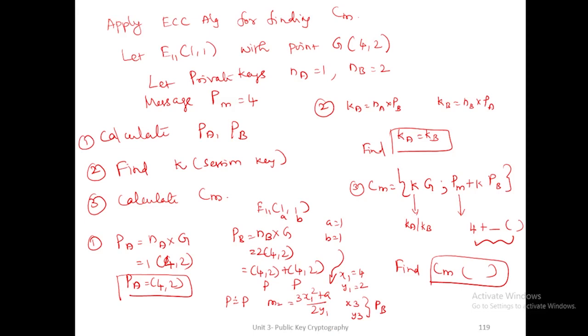Welcome to cryptography class. Today I am going to explain the problem for solving elliptical cryptography notations. The problem is: apply elliptical cryptography algorithm for finding the ciphertext value. They will give the points E11(1,1) with base point G(4,2), and the private key values are na = 1, nb = 2, and the plaintext message pm = 4. We need to calculate public keys pa and pb, session key k, and the ciphertext value cm.